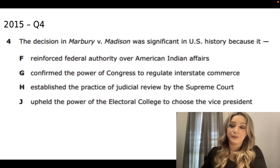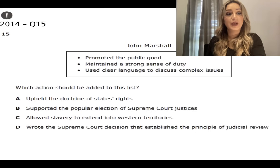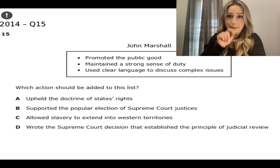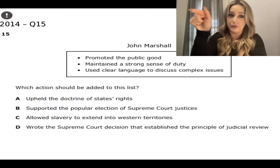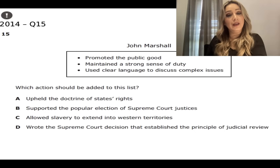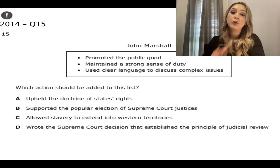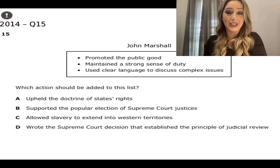John Marshall promoted the public good, maintained a strong sense of duty, and used clear language to discuss complex issues. Which action should be added to this list? A - upheld the doctrine of states' rights; B - supported the popular election of Supreme Court justices; C - allowed slavery to extend into Western territories; or D - wrote the Supreme Court decision that established the principle of judicial review. Remember the giant C and M&M Juniors - we should have all answered D: wrote the Supreme Court decision that established the principle of judicial review.